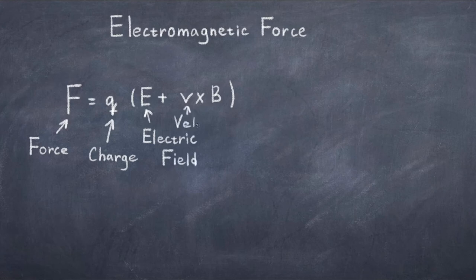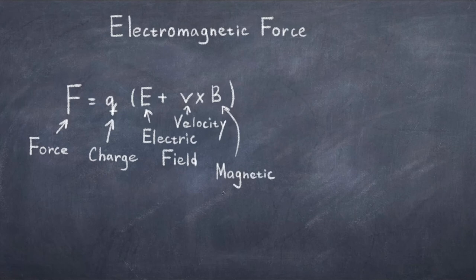With this equation, there was finally a direct link between electricity and magnetism. This becomes even more clear if we set the force to 0, F equal to 0, and we obtain minus E is equal to v cross B.